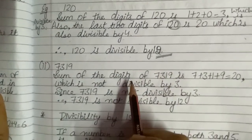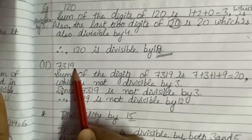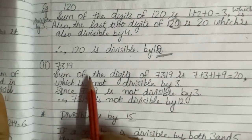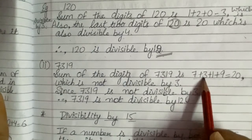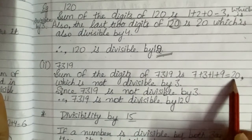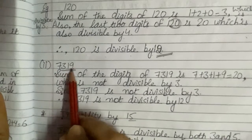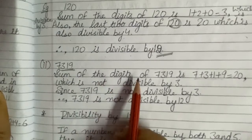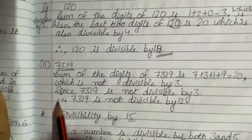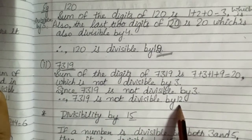I have taken one more example: the number 7319. First, I will check its divisibility by 3 by adding the digits: 7 plus 3 plus 1 plus 9 gives 20. This 20 is not divisible by 3. Therefore, 7319 is not divisible by 3. So there is no need to check divisibility by 4, and we can say that 7319 is also not divisible by 12.